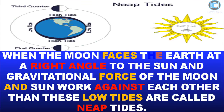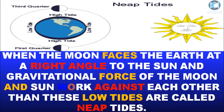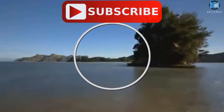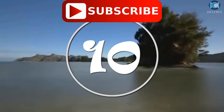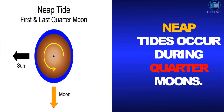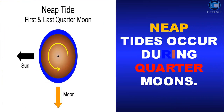When the Moon faces the Earth at a right angle to the Sun, and the gravitational force of the Moon and Sun work against each other, then these low tides are called neap tides. Neap tides occur during quarter moons.